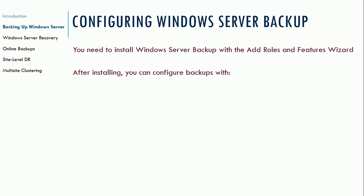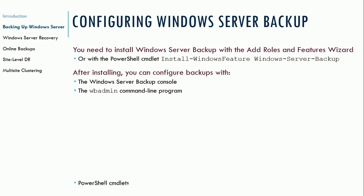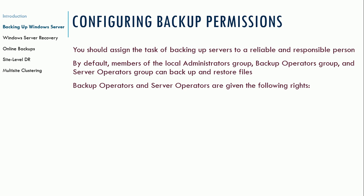First, you need to install the Windows Server Backup using the Add Roles and Features Wizard, just like we've done with everything else. It's the Windows Server Backup feature that you're going to install. After installing, you can configure backups with the Windows Server Backup console, the WBAdmin command line program, or some of the PowerShell command lines that I'll show you at the end of this slide deck.